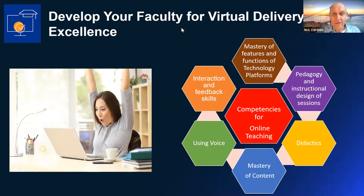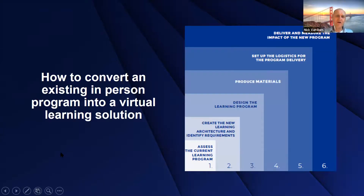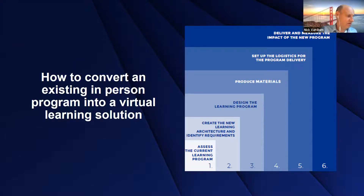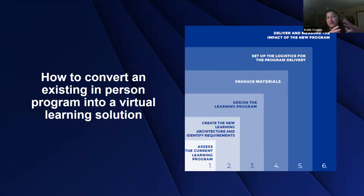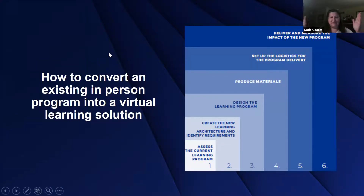Thanks Nick. You'll see there's a lot of interplay between this method and all of the guiding principles Nick just went through. The first thing we do is the assessment upfront — really take a look at the current program and find out what's the core and critical content that needs to be delivered. Use this as a time to ask: are there other ways to teach this content? Look at your objectives, the feedback from the in-person program, and what are the really high-priority critical skills, knowledge, and mindsets you want to develop.